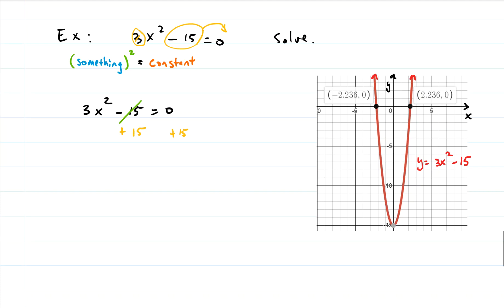So those cancel and I get 3x squared equals 15. We're getting closer to something squared equals a constant. Now we need to get rid of that 3, so let's divide by 3.